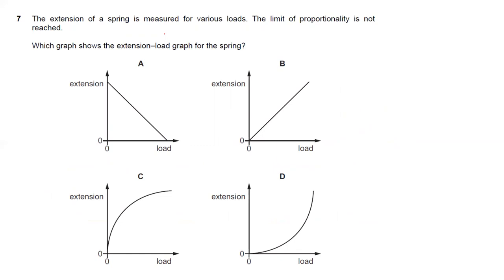Question seven: the extension of a spring is measured for various loads and the limit of proportionality is not reached. Which graph shows the extension-load graph? Remember, for a spring F = kx, so extension is directly proportional to force. This gives a straight-line graph through the origin. Answer B is the right choice.